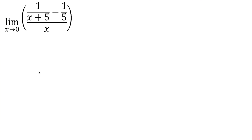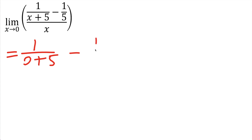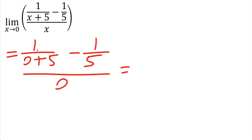First, let's just plug in zero and see what we get. If we plug in zero, we get one divided by zero plus five, minus one divided by five, and the whole thing divided by zero. Zero plus five is five, so we get one-fifth minus one-fifth — the numerator is zero over zero. This is a big red flag that we have to apply one of our strategies to solve this problem.